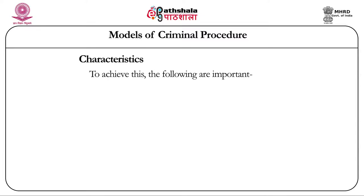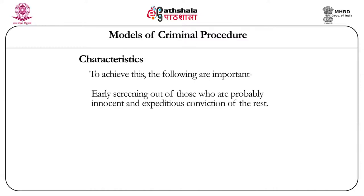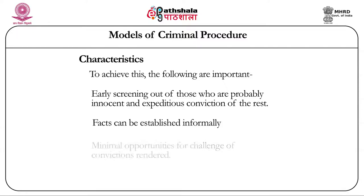In order to achieve efficiency, speed, and finality, the model considers three important things: first, early screening out of those who are probably innocent and expeditious conviction of the rest; second, facts can be established informally — facts established by administrative agencies as opposed to a judicial agency are reliable indicators of guilt; third, there shall be minimum opportunities for challenge of convictions rendered, with minimal interference at higher levels.